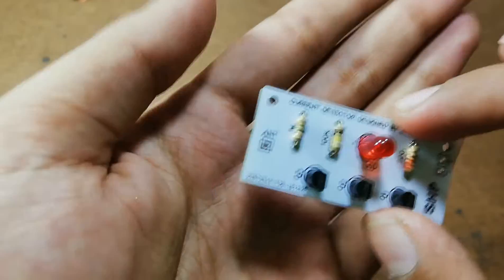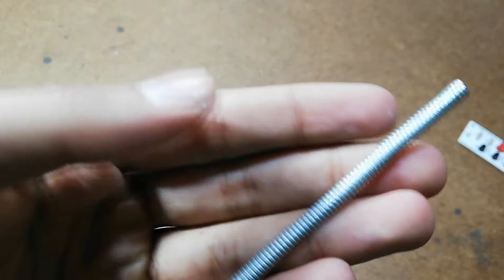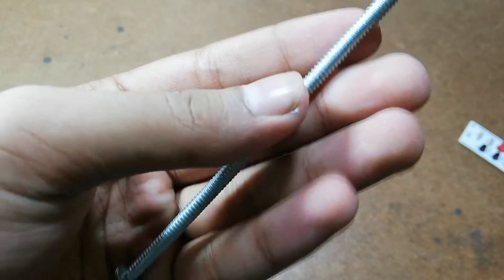And for making the antenna for this module, you just have to twist the copper wire against this bolt, just four to five turns.